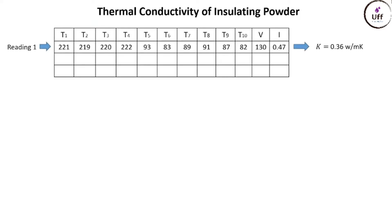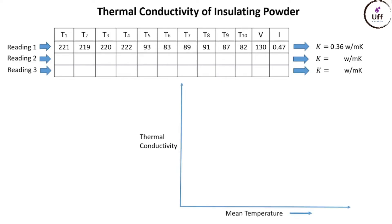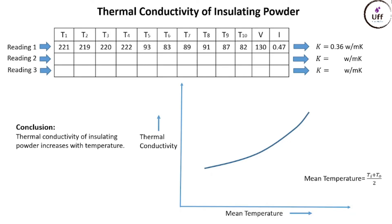This is our first reading, giving thermal conductivity of 0.36 watts per meter kelvin. Similarly, take a second reading and find thermal conductivity, then a third reading, and ultimately plot a graph of thermal conductivity versus mean temperature. The mean temperature is the average of the inner and outer sphere surface temperatures. We can observe that as mean temperature increases, thermal conductivity increases. The final conclusion is that thermal conductivity of insulating powder increases with temperature.